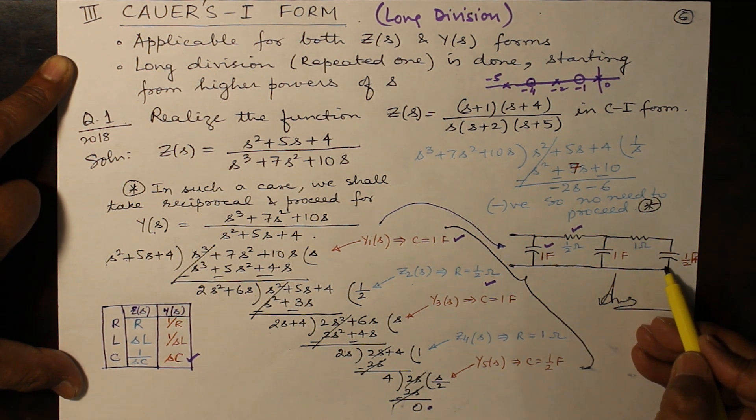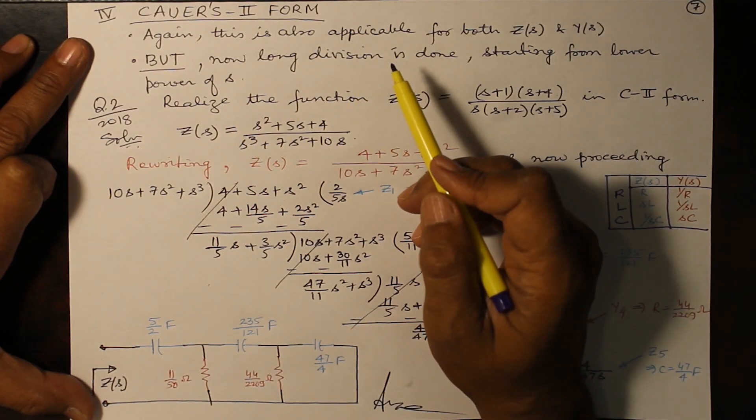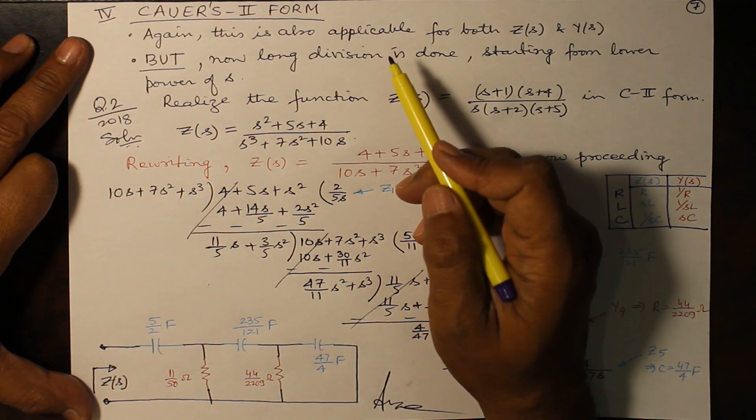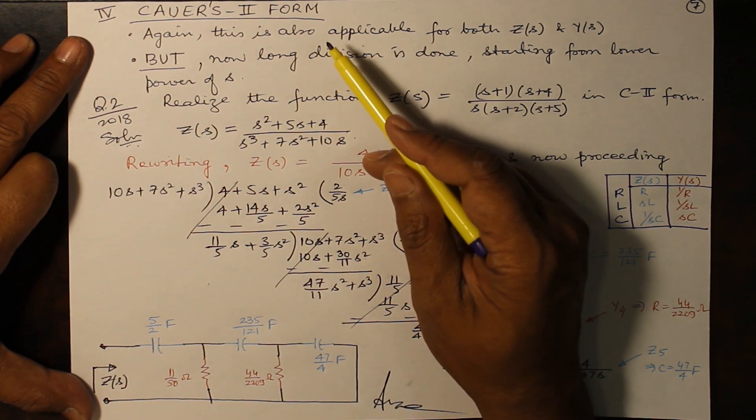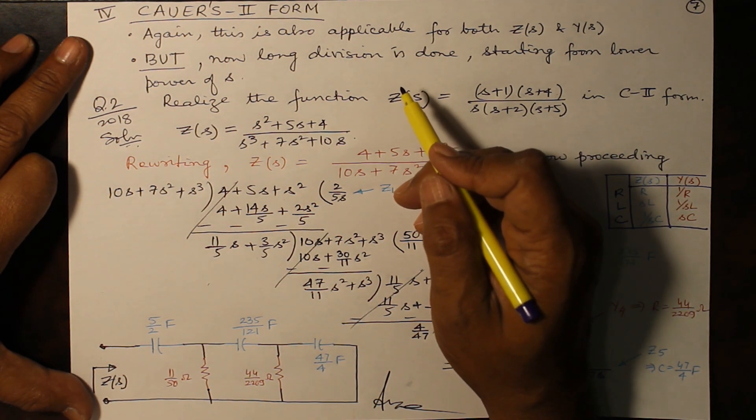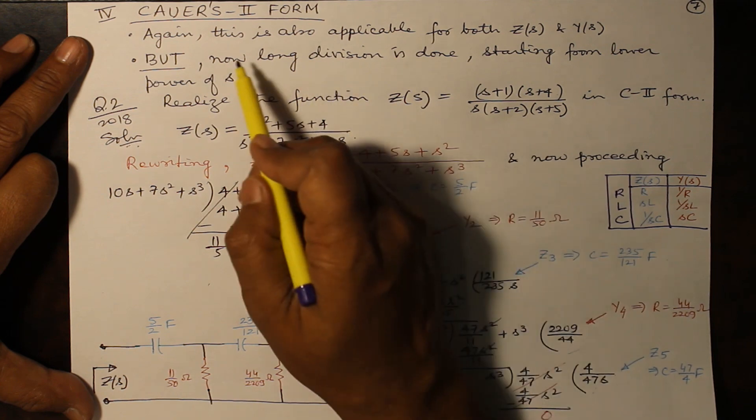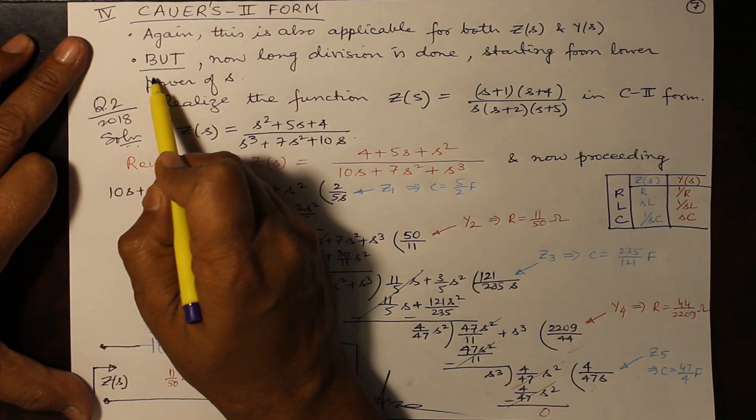Now coming on to the last topic of this realization of networks, network synthesis in the Cauer's II form. Solving by Cauer's II form is a bit laborious because when you divide by lower power of s, it becomes difficult. The values become very big. This is also applicable for both Z(s) and Y(s) as before, but now the long division is to be done starting from lower power of s.